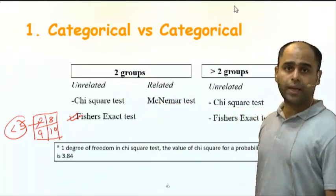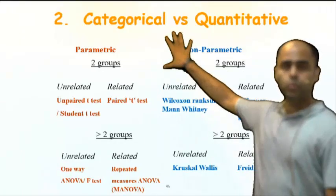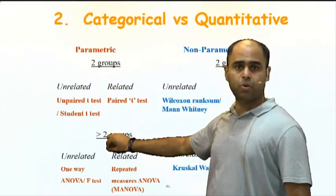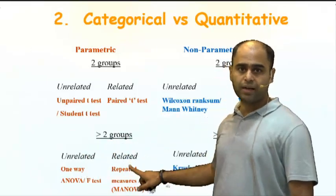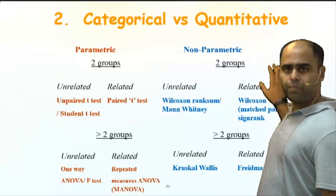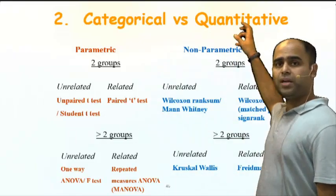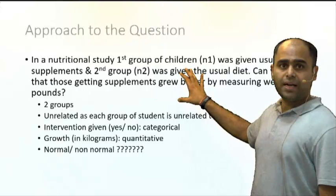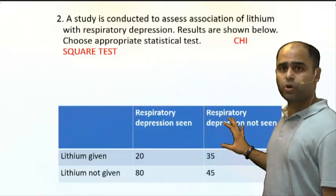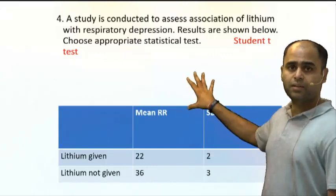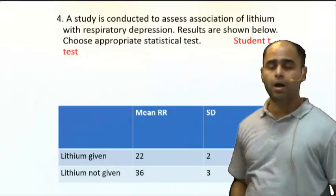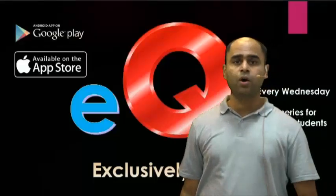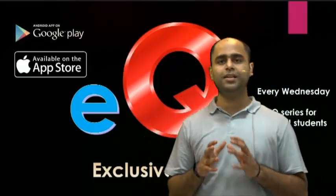Algorithm two for quantitative output — parametric: two groups unrelated uses unpaired or Student t-test; two groups related uses paired t-test; more than two groups unrelated uses one-way ANOVA; related uses MANOVA — though that last point is not important at your PG level. So in this question, when the output was qualitative we use chi-square, and when quantitative we use the unpaired t-test, also called the Student t-test.